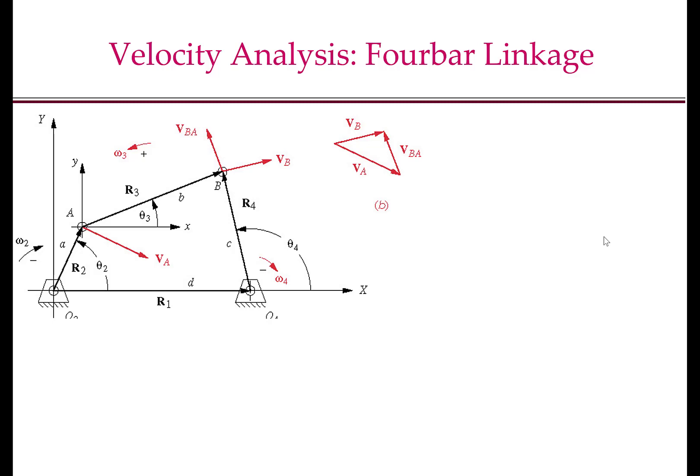In the last module, we looked at the velocity and acceleration kinematics of a single link whose motion is constrained by a revolute joint. In this module, we will use the results of the last module to do the velocity and acceleration analysis of a four-bar linkage.